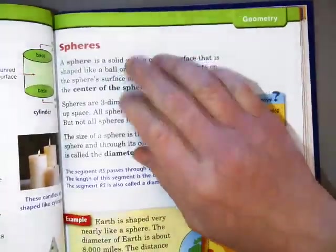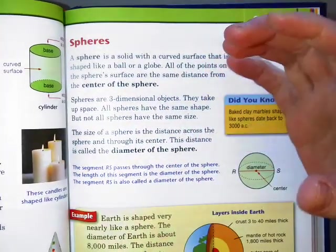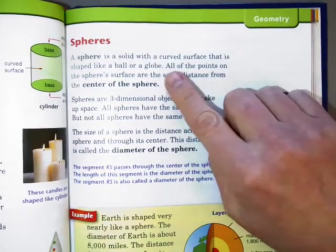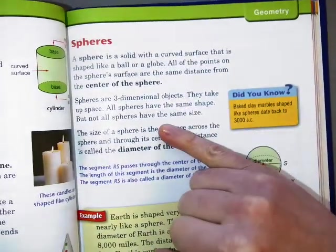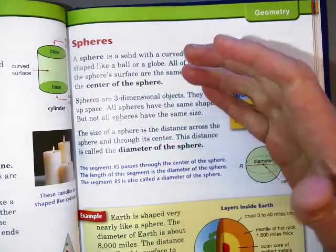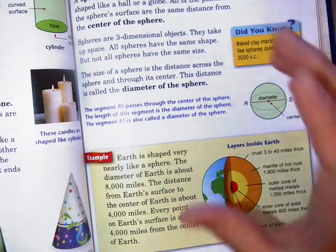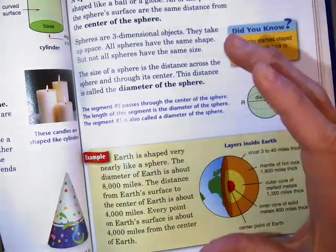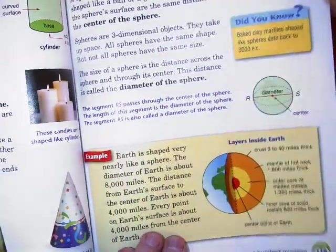We have spheres. A sphere is a solid with a curved surface that's shaped like a ball or a globe. Basically any ball or globe. All of the points on a sphere's surface are the same distance from the center of the sphere. They're three dimensional, they take up space, they all have the same shape, but they're not all the same size. The size of the sphere is the distance across it and through its center, and that's called the diameter of the sphere.